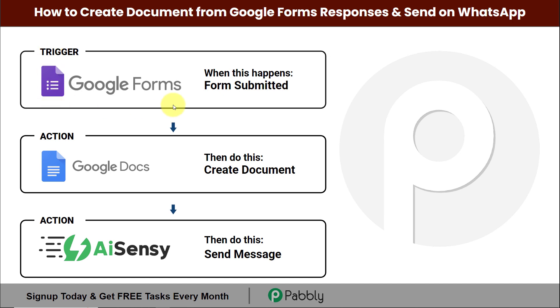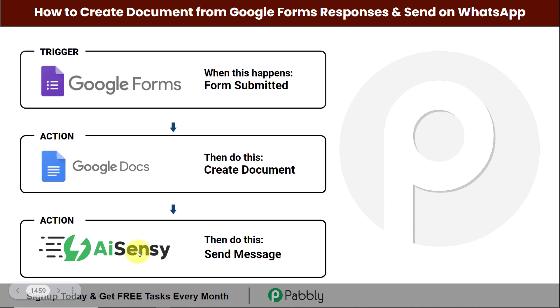Here my trigger will be Google Forms. Then my action applications will be Google Documents and WhatsApp by AiSensi. You can automate and integrate this entire process yourself. To understand how, let's begin.